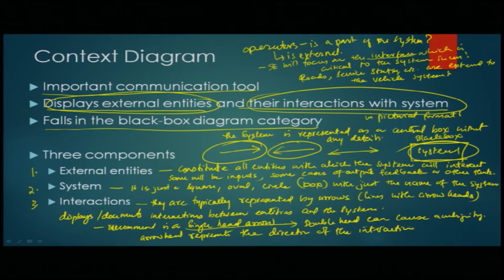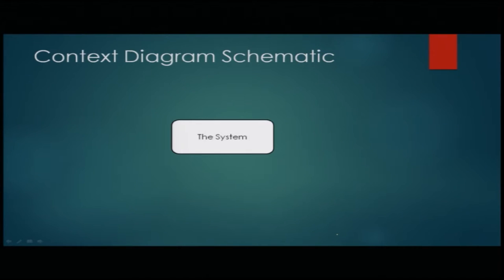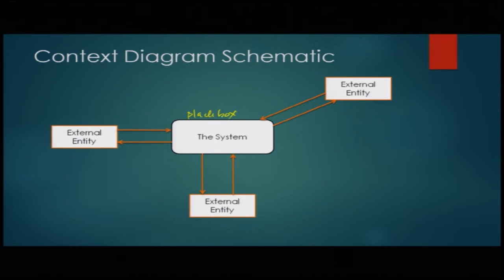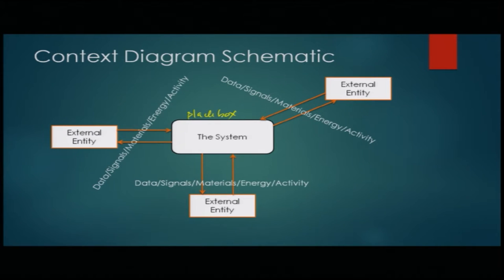The arrowhead represents the direction of the interaction — whether it is going into the system or out of the system. It is usually preferred to use a single-headed arrow to minimize ambiguity. The first box — the black box — is just a box with the system name in it. You have different external entities placed around it, and then you have single arrowheads showing directions of what is coming into the system and going out. These entities are typically data, signals, materials, energy, and activity.